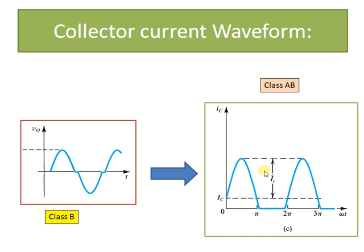So here you can see the waveform, that is the collector current waveform corresponding to the class AB amplifier, which goes beyond π in this particular case.